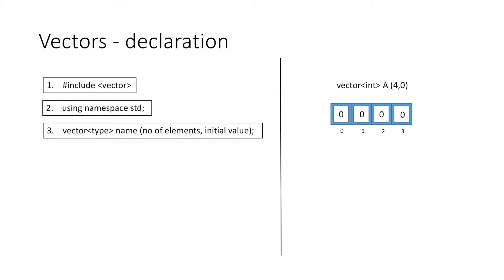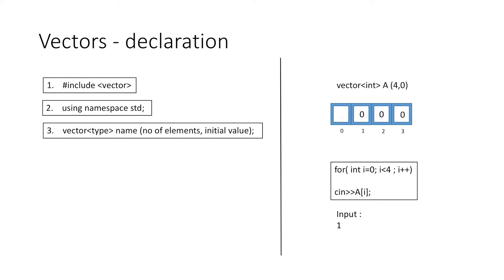That is, if we want to insert four elements, we will start our for loop with i equal to 0 and i less than 4, and we can simply use cin with a[i]. That is, if our first input is 1, then the value at index 0 would be 1, and if our second input is 2, the value at index 1 would become 2, and similarly for every input the corresponding value would change.